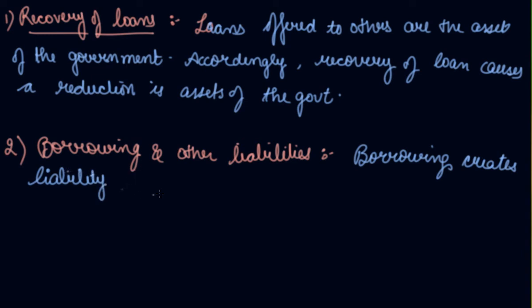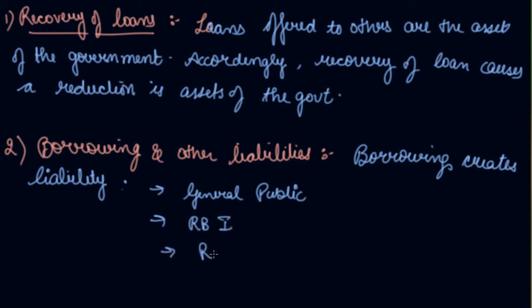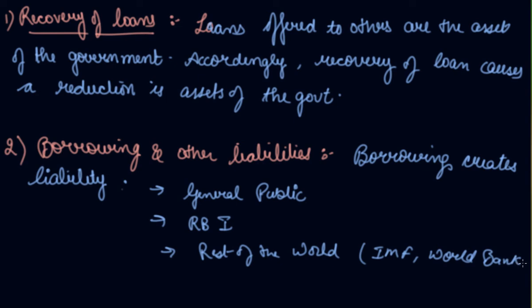It may be noted that the government borrows money from the public — if you deposit money into a government bank or post office, the government is taking money from you and using it, meaning the government is taking a loan from you and has to repay you back when you demand. The government can also borrow from the RBI, or from the rest of the world — such as the World Bank or the IMF, the International Monetary Fund.